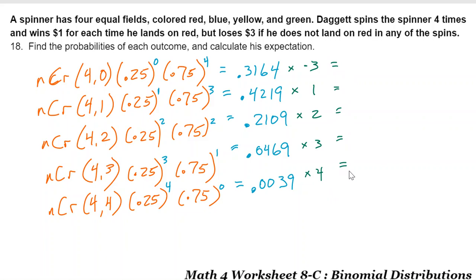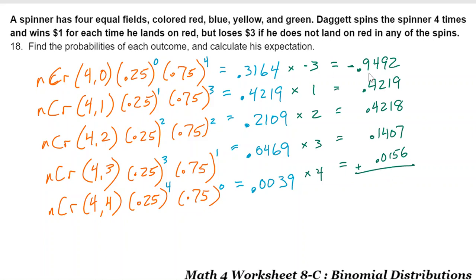Multiplying each probability by its payoff and summing gives a grand total of 0.0508 — positive. His expected value is about five cents per game. That's about as close to a fair game as you could ask for. If he plays a thousand times he'll average earning a nickel each time. That is his expected value, and that completes this worksheet.